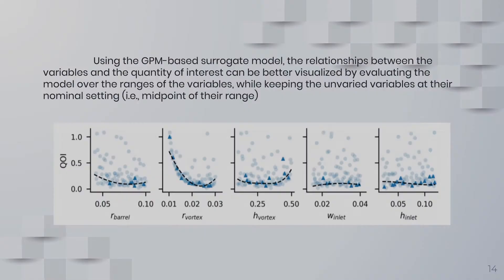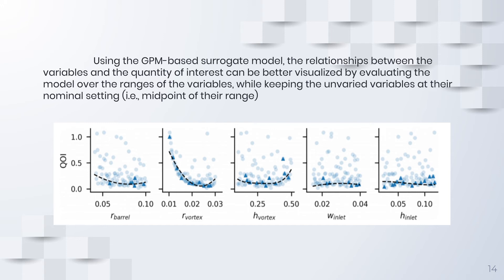Using the GPM-based surrogate model, the relationship between variables and the quantity of interest can be better visualized by evaluating the model over the range of each variable while keeping the remaining variables at their nominal settings. A strong relationship is observed between the vortex finder radius and the outlet vortex. The other four variables do not exhibit a strong relationship, with the inlet width and inlet height showing an almost flat response.